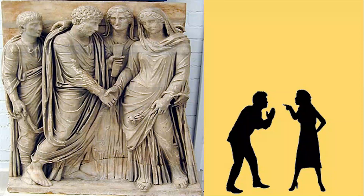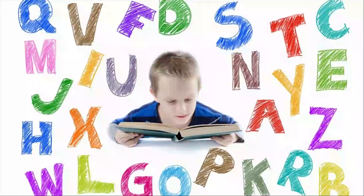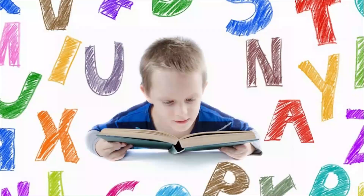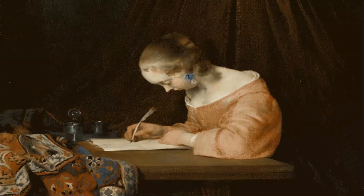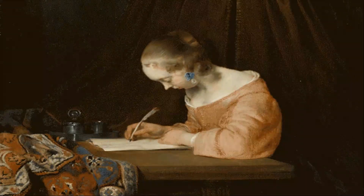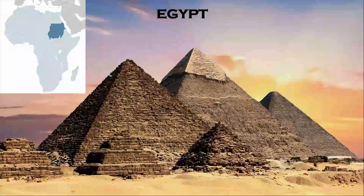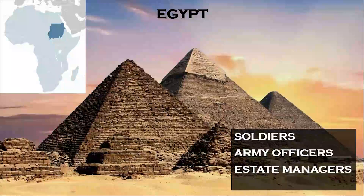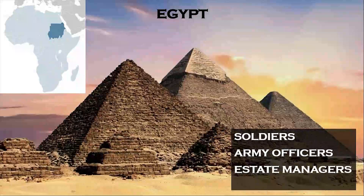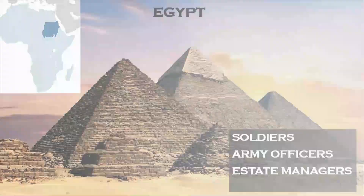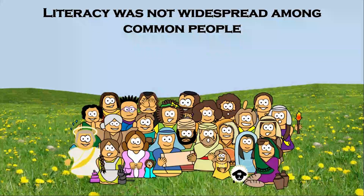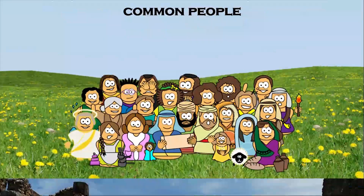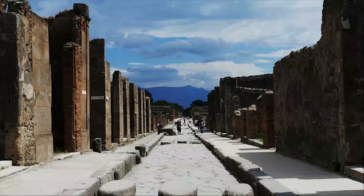Divorce was relatively easy — both the husband and wife enjoyed the freedom to dissolve the marriage. Literacy was considerably widespread, though not uniformly so across the empire. The rates of casual literacy varied between different parts. In Egypt, for example, literacy was widespread among soldiers, army officers, and estate managers. Many professional scribes wrote formal documents such as contracts, but literacy was not prevalent among the common populace.